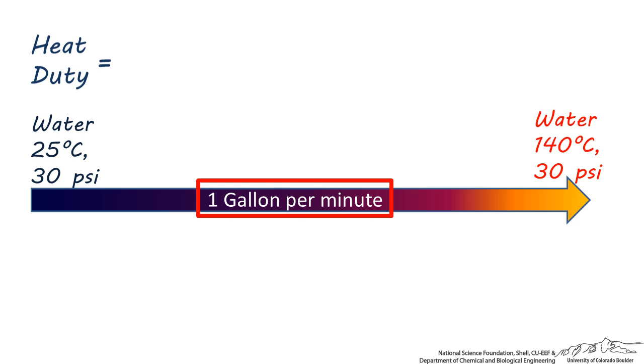I chose 1 gallon per minute because it's around the maximum flow rate coming out of most bathroom sink faucets, so this is not a very high flow rate stream. I chose 30 psi because this is around the pressure of water flowing through a typical faucet.